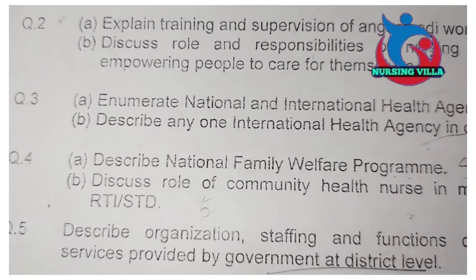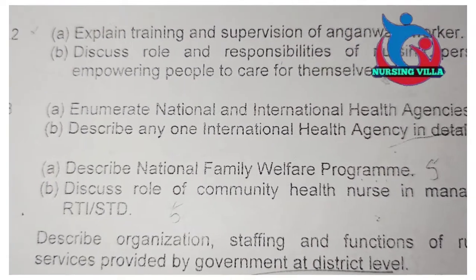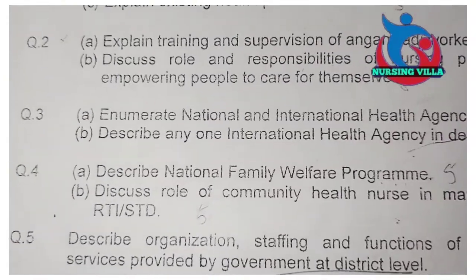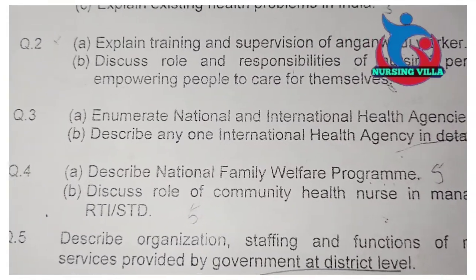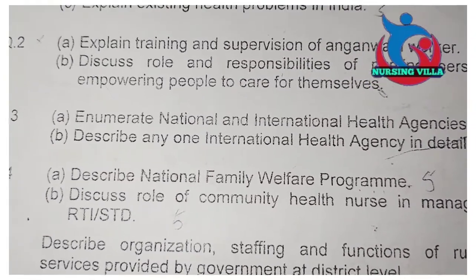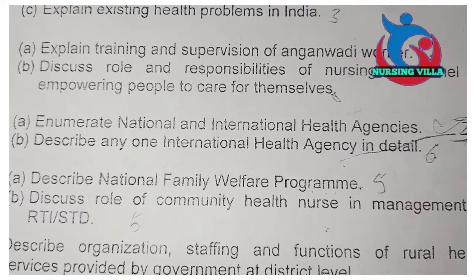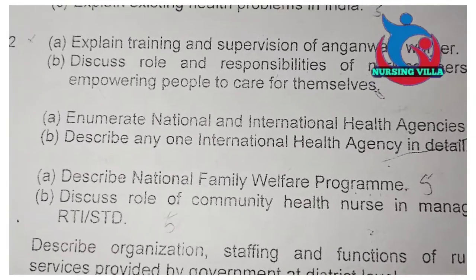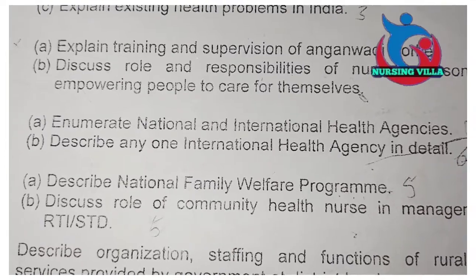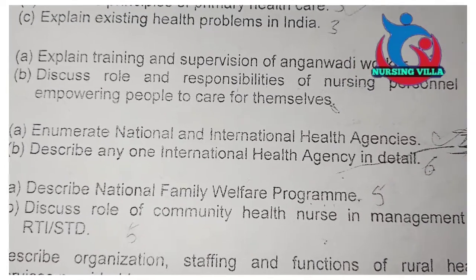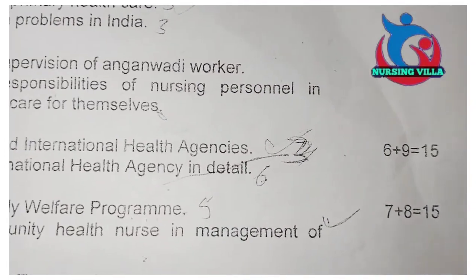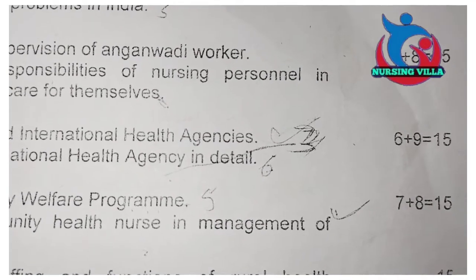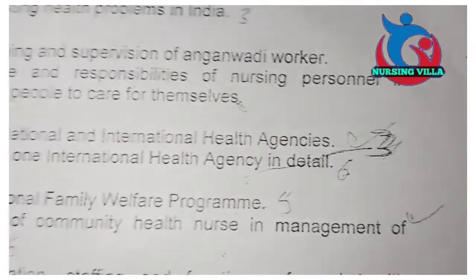Question number three also contains two parts, A and B. Question A: enumerate national and international health agencies. Question B: describe any one international health agency in detail. It contains 6 plus 9, equal to 15 marks.